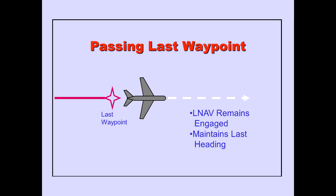If the airplane passes over the last route waypoint, LNAV remains engaged and commands the airplane to maintain the last heading.